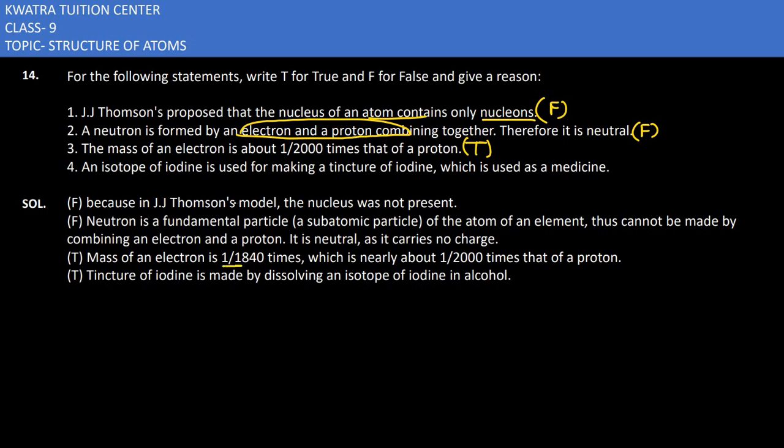An isotope of iodine is used for making a tincture of iodine which is used as medicine. So yes, tincture of iodine kaise banta hai? Iodine ke help se banta hai aur kya use hota hai mein? Alcohol. And it works as a medicine for different purposes. So it would be true. The last one would be true in this case.